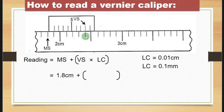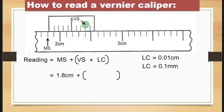The Vernier scale reading is the marking on the Vernier scale that coincides with a marking on the main scale. You begin from this line — treated as zero — then count: one, two, three, four, five, six, seven, eight. This line is line number eight, so you pick it as 8, without units.